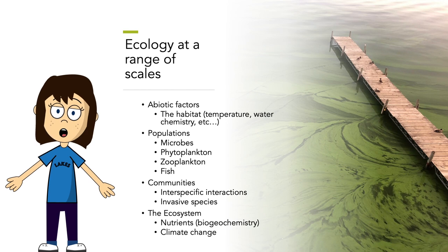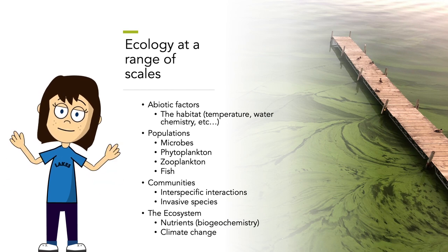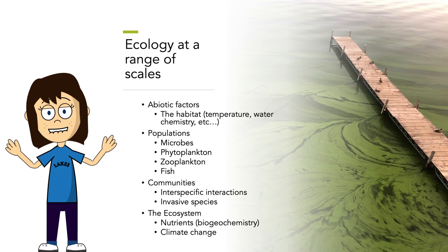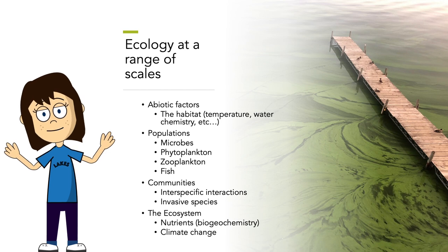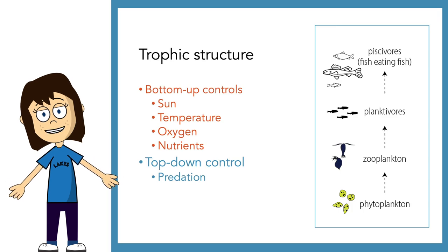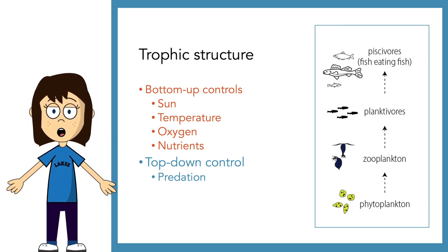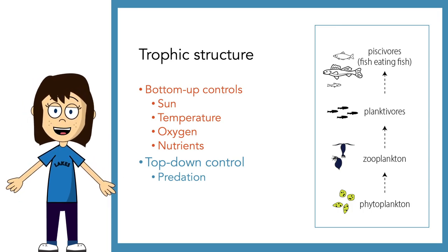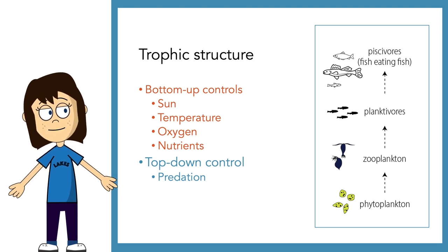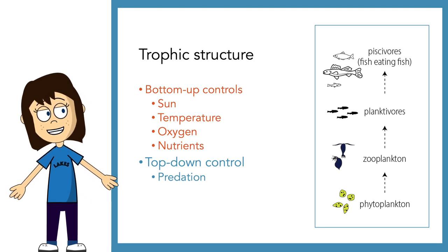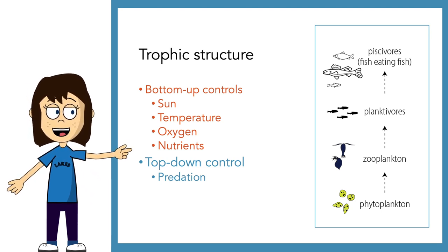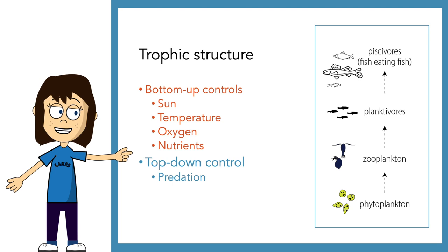And then we study the ecosystem — thinking about interactions between abiotic and biotic factors, especially the biogeochemistry of the lake, and those nutrient cycles like phosphorus, nitrogen, and carbon. And the elephant in the room is obviously climate change. What's going to happen to this lake in the future as temperatures get warmer, as we get more precipitation, as winter becomes shorter? To start answering these questions, we're going to look at the trophic structure of the lake.